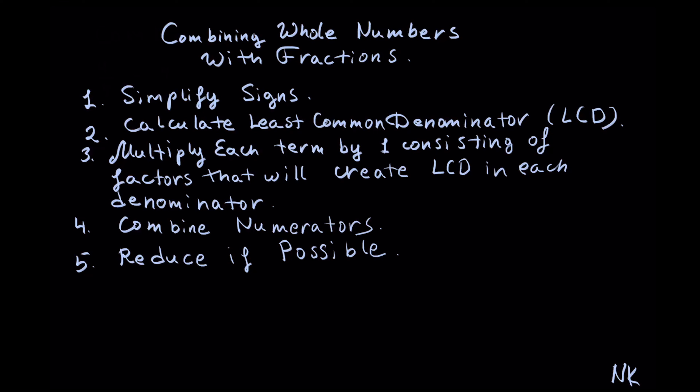Here we're going to be combining whole numbers with fractions. The first thing we're going to do is to simplify signs. Then we have to calculate least common denominator, or LCD for short. Then we need to multiply each term by one, consisting of factors that will create LCD in each denominator. What I mean by 1 is something like if I need to multiply denominator by 5, I will also multiply numerator by 5, because 5 out of 5 simplifies into 1. Then we're going to combine numerators and reduce if possible.